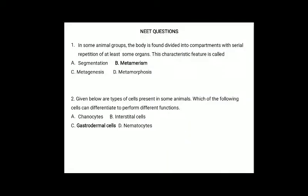Now we discuss some NEET questions. First question: in some animal groups, the body is found divided into compartments with serial repetition of at least some organs. This characteristic feature is called: (A) segmentation, (B) metamerism, (C) metagenesis, (D) metamorphosis. The correct answer is option B, metamerism, because metamerism is true segmentation where external division corresponds to internal division.